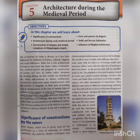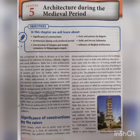India has a rich architectural heritage as seen from the Indus Valley civilization. The medieval period saw progress in the construction of temples and forts by Indian rulers. When the Muslims came to India, they introduced their own Islamic architecture, and a mixture known as Indo-Islamic architecture can also be seen.